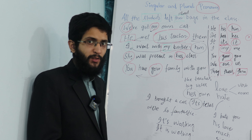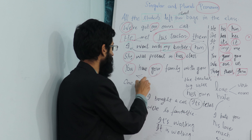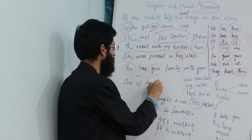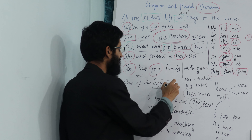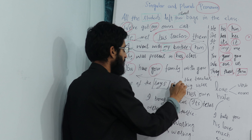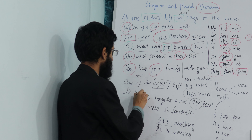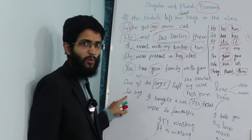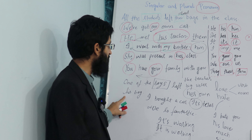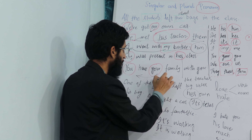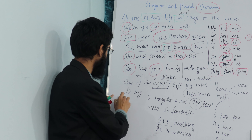Let me tell you another important rule. The sentence: 'One of the boys' — 'boys' is plural. 'One of the boys left his bag.' Now you have to tell me whether it is correct or wrong — 'his bag' or 'their bag.' Most students would consider that 'boys' is plural, so the pronoun would be plural as well: 'their bag.' But it's incorrect.